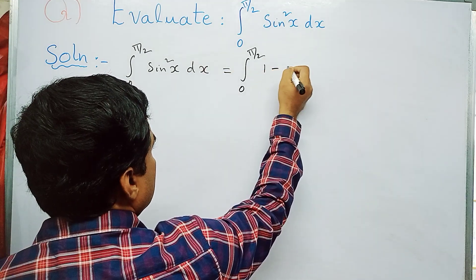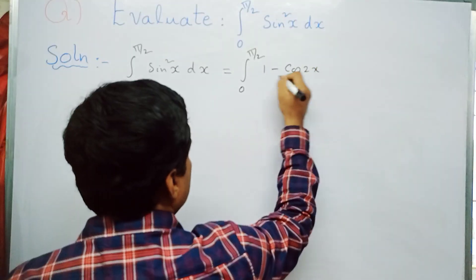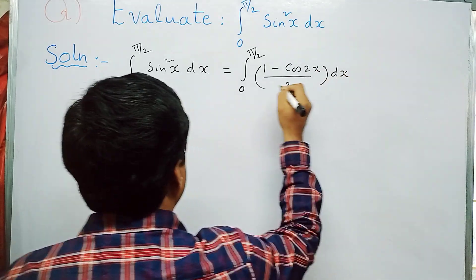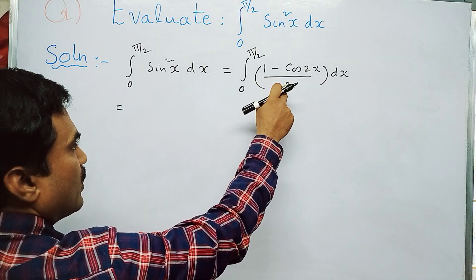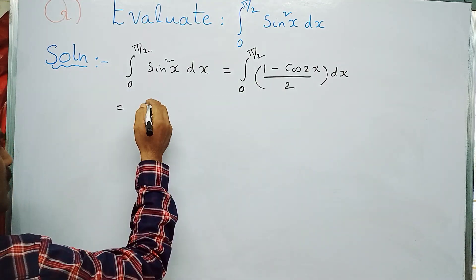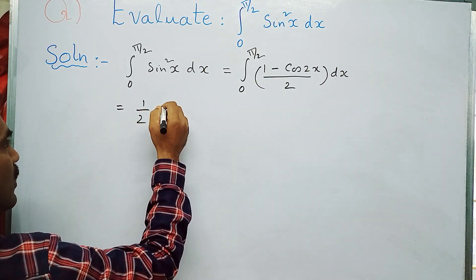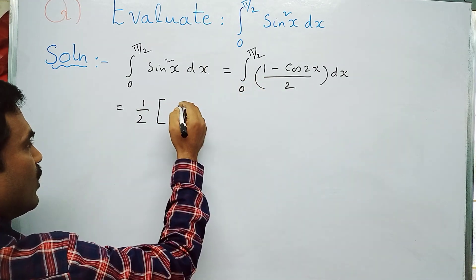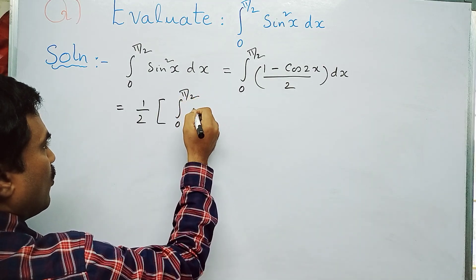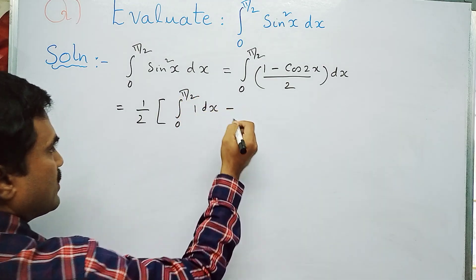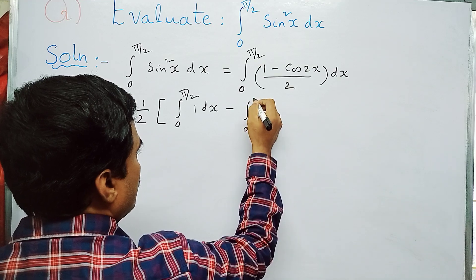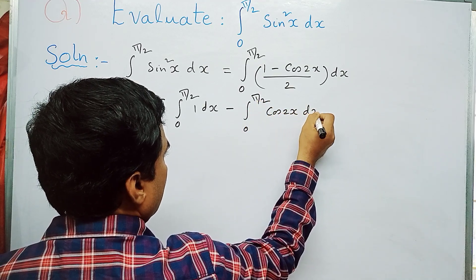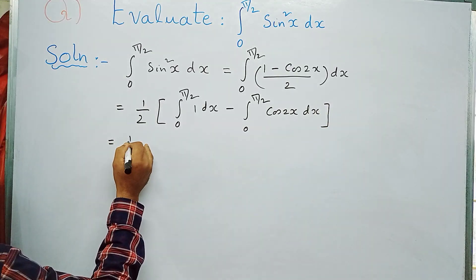Next, apply the decomposition method. Take 1/2 outside since it's a constant. This gives us: 1/2 times the quantity [integral from 0 to π/2 of 1 dx minus integral from 0 to π/2 of cos2x dx].